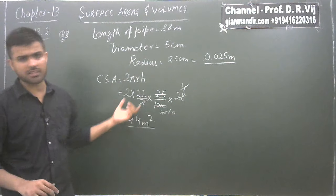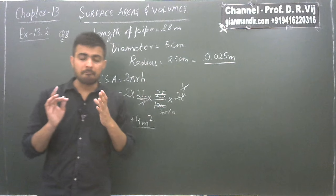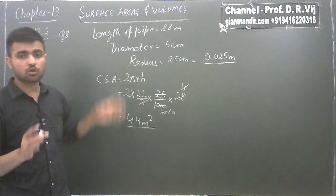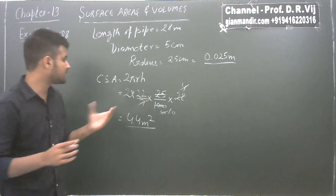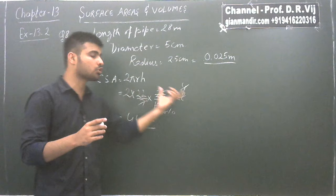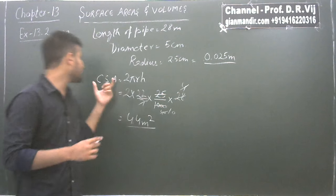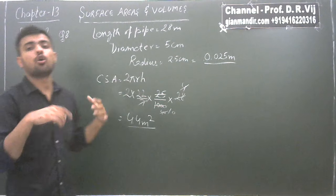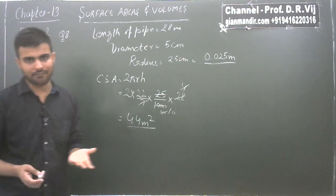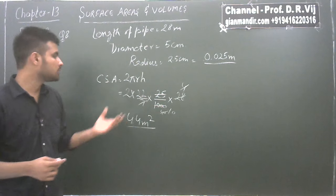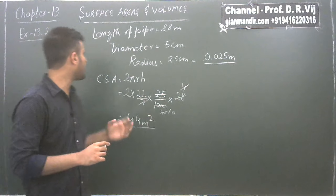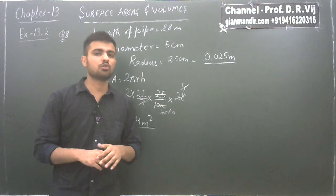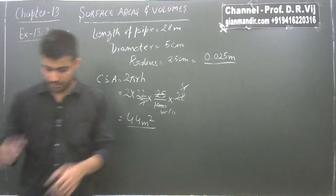A very easy question. The important thing is you have to see what the question is asking — whether it is asking for curved surface area, volume, or total surface area. That is the most important part. This was question number 8.